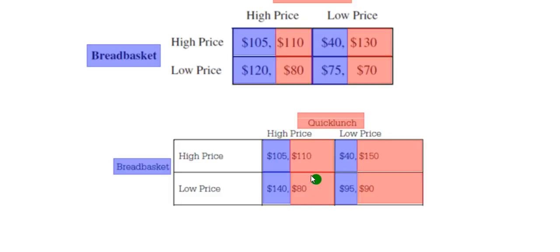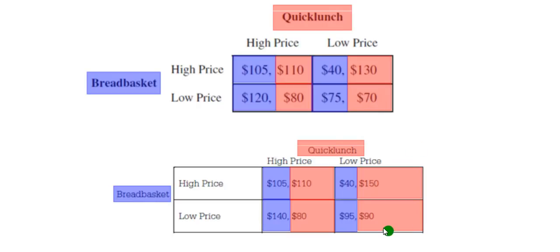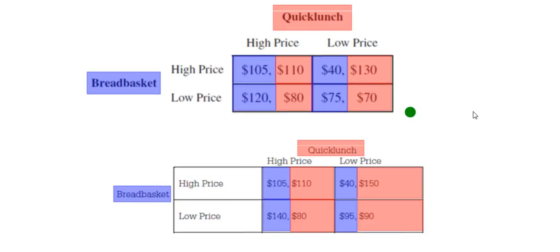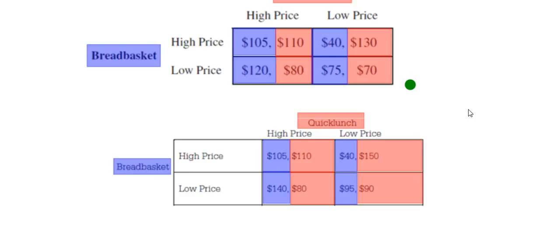So the low price values change as follows: 120 goes to 140, 80 stays (it's high price), 130 goes to 150, the low for Quick Lunch goes from 70 to 90, and the lows for Bread Basket go to 140 and 95. You have to be careful — Bread Basket's low prices are read horizontally, while Quick Lunch's low prices are read vertically, so it's those four cells that are changing.